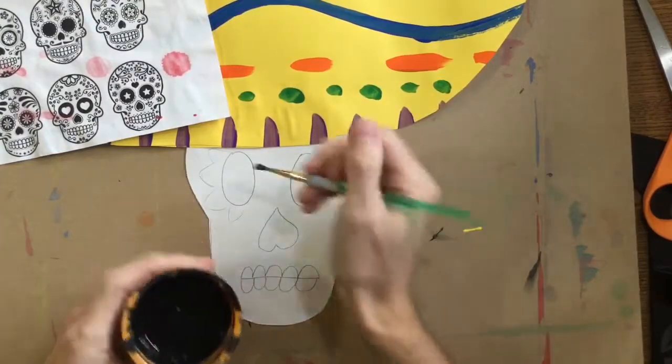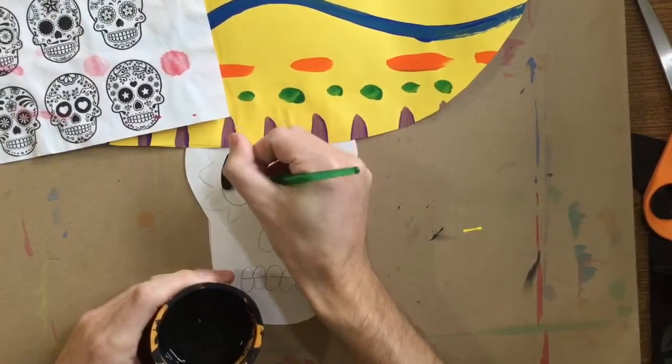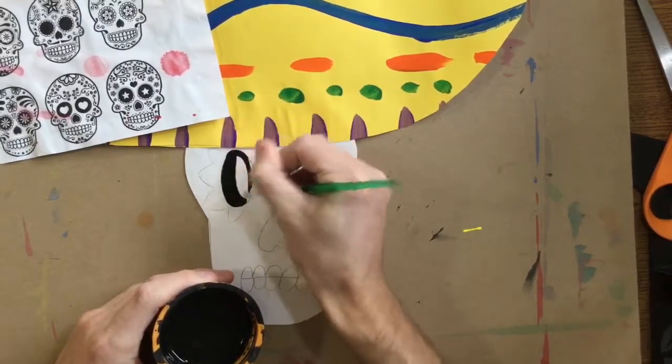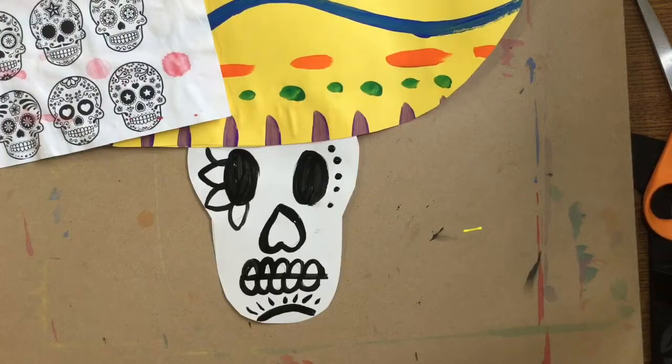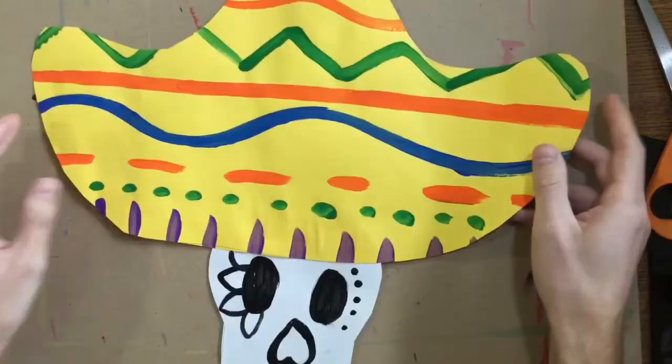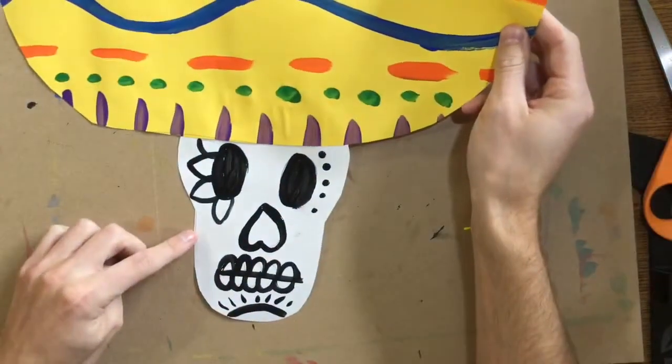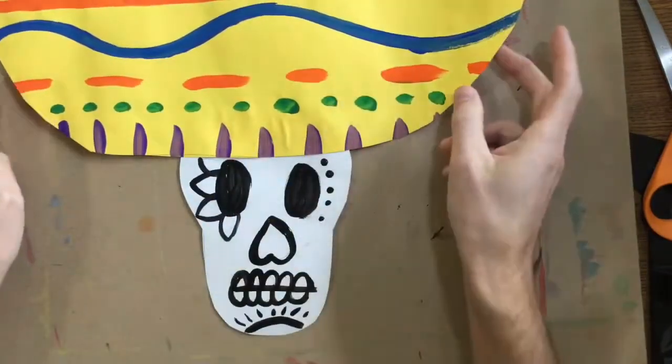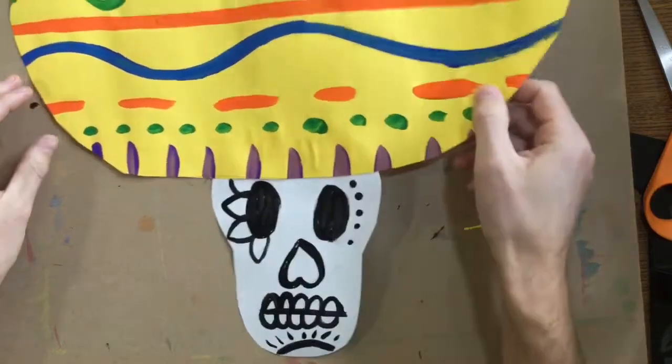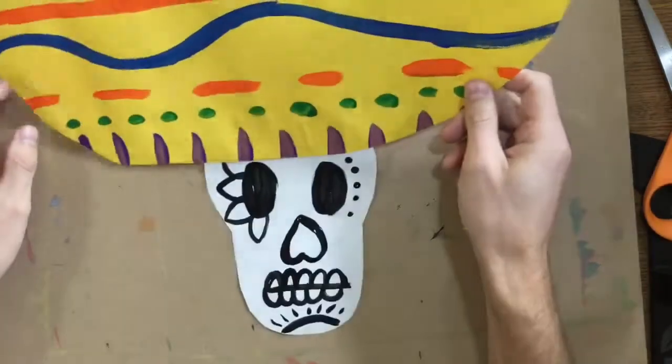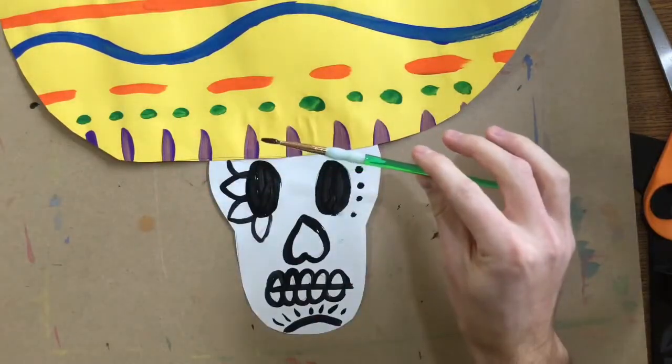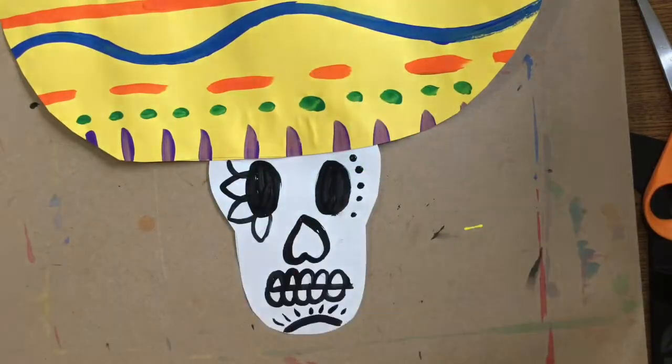And last but not least I am going to paint that. You got an itty bitty brush to do a nice job. After you are all done cutting out your sombrero, tracing and cutting out that head, gluing it to the back of the sombrero, and drawing and painting your beautiful skull, these are going to go in the bottom of the drying rack as low as we can go. When you are done, please make sure to put your brush in the dirty brush bin and throw away all of your scraps.